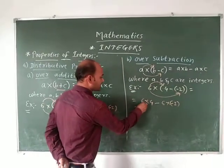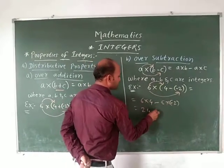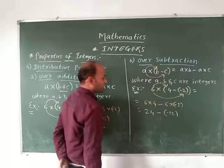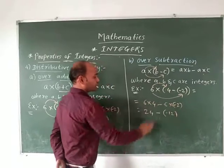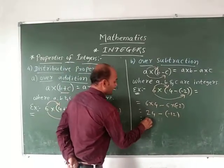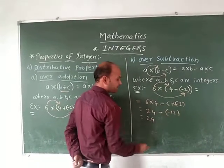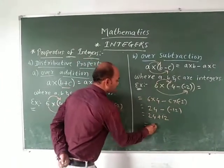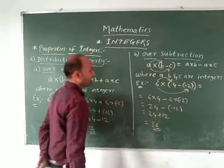So then let us know, 6 fours are 24, minus sign is there, 6 times minus 2 is minus 12. So here minus sign is there, so minus sign. So here 24, minus sign to minus sign becomes plus, 12 plus 24 becomes 36 is the answer. Okay, got it?